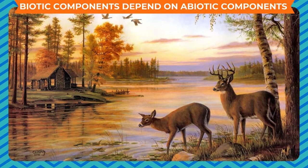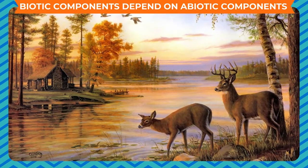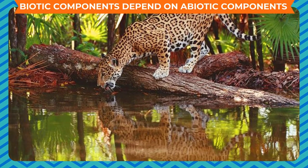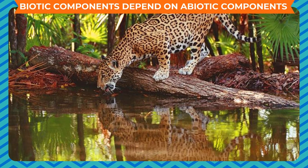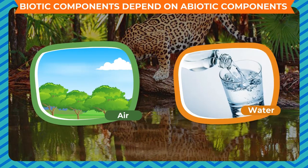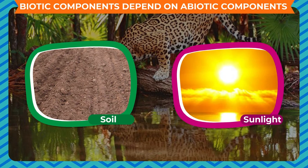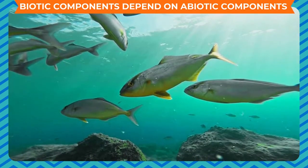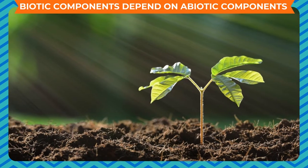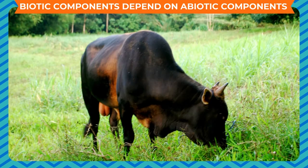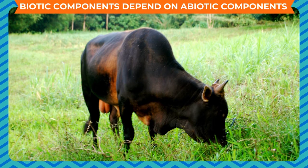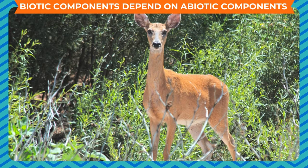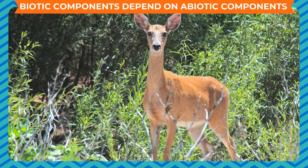All biotic components in a habitat share common abiotic components such as air, water, soil and sunlight, and there is constant interaction between the two. For example, plants need sunlight and soil to grow. Animals also cannot live without food, water and air. Both plants and animals need a certain temperature range to survive.